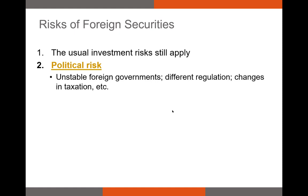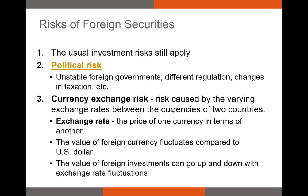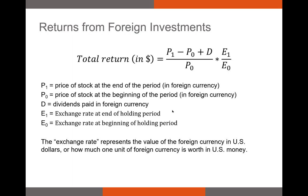Nationalization will typically happen in authoritarian countries. The last risk to mention is exchange rate risk, sometimes called currency exchange risk. This is the risk caused by varying exchange rates between countries with different currencies. If you buy a stock denominated in euros and sell it six months later, the exchange rate between the euro and the dollar will likely have changed, and we need to factor this into our return formula. We use the holding period return formula multiplied by the exchange rate at the end of the holding period divided by the exchange rate at the beginning.